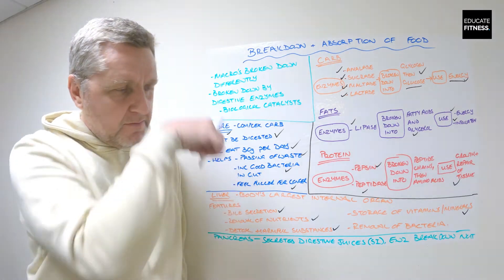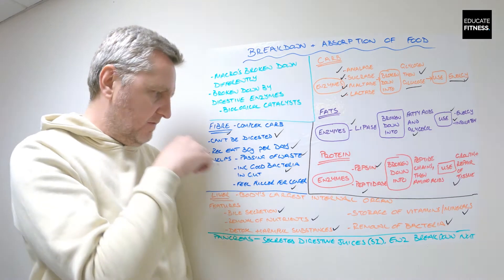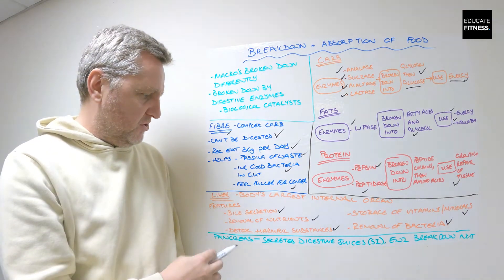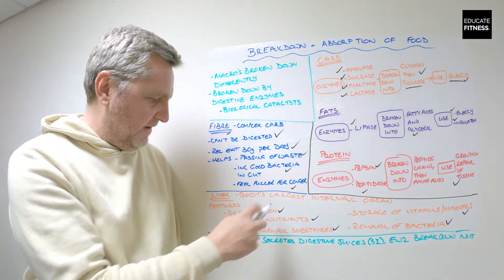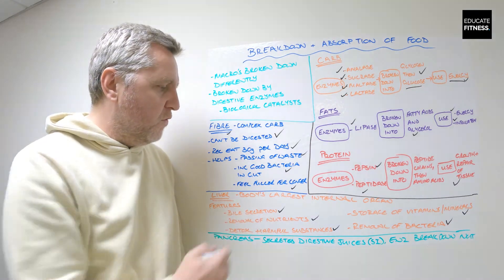And finally removal of bacteria. These are all the important features of the liver, five for us to remember. Just quickly go through them again: bile secretion, removal of nutrients, detox of harmful substances, storage of vitamins and minerals, and removal of bacteria.